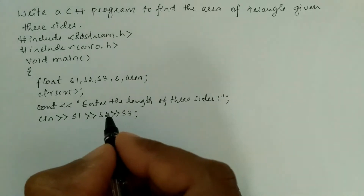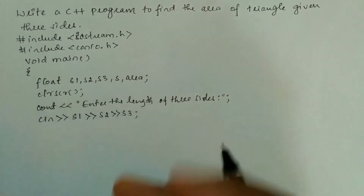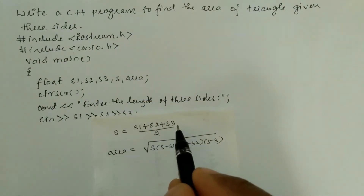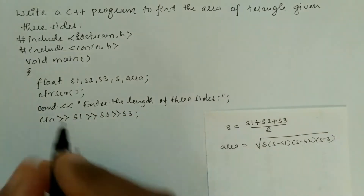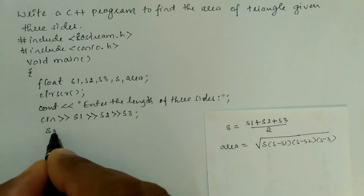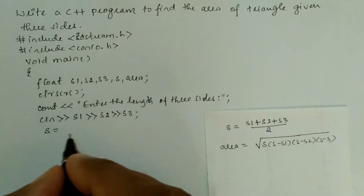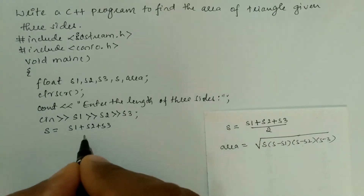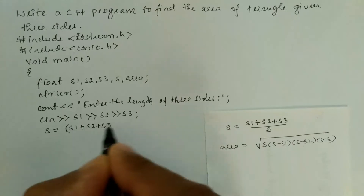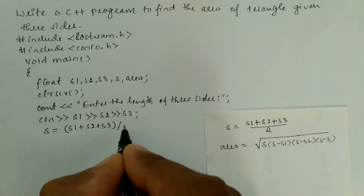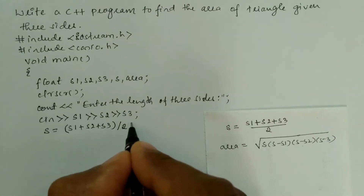After receiving the length of three sides, we calculate s. The formula is s = (s1 + s2 + s3) / 2. In computerized form, we write: s = (s1 + s2 + s3) / 2, putting the expression inside round brackets, using a forward slash for division, then writing 2 and a semicolon.